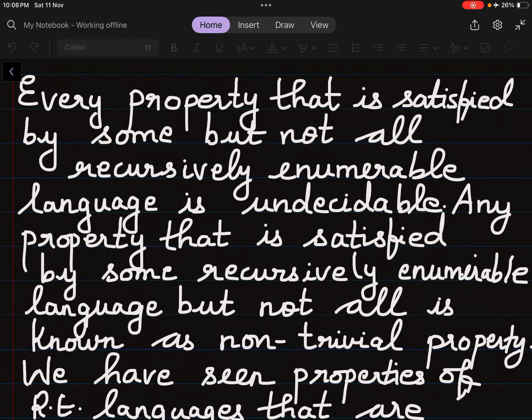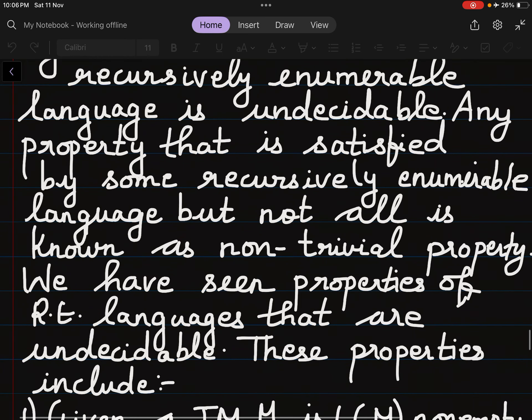Any property that is satisfied by some recursively enumerable languages but not all is known as a non-trivial property. This means a property which is satisfied by some recursively enumerable languages but not satisfied by all recursively enumerable languages is known as a non-trivial property.